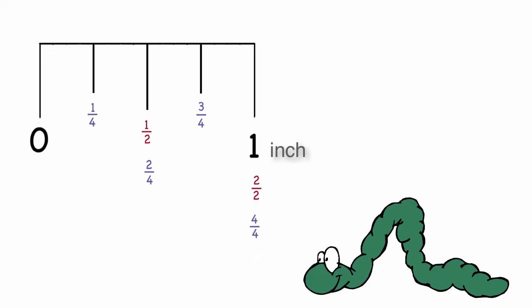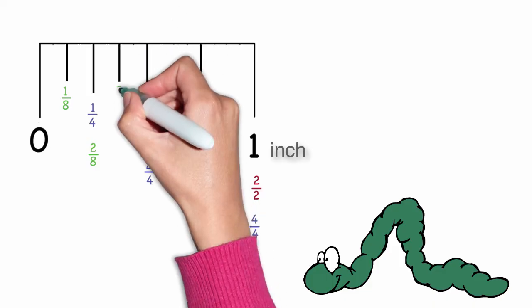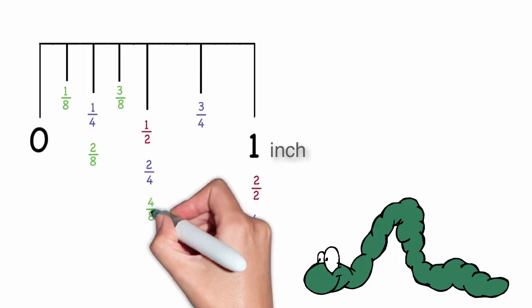Let's do that one more time. Let's cut an inch into eight equal pieces. I would have one-eighth, two-eighths or a fourth, three-eighths, four-eighths, which is a half,